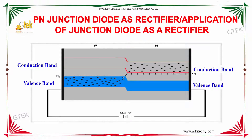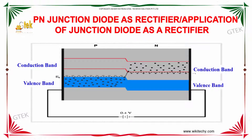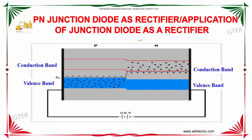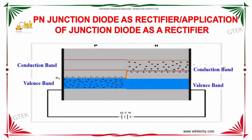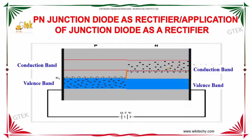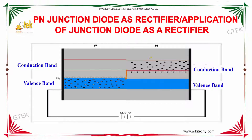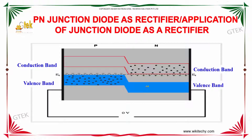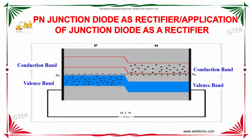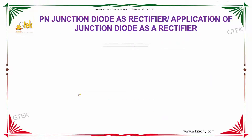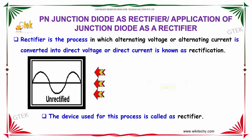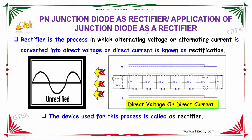We are looking into the different areas of the PN junction diode as rectifier and the application of junction diode as a rectifier. Here is the valence band and conduction band. This is how PN junction diodes are working and taking care of conducting the electricity. PN junction diode as rectifier.